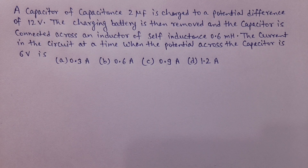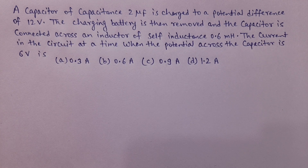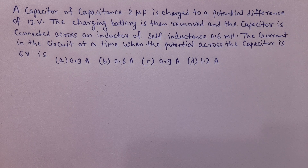हम लोगों को correct option choose करना है. एक capacitor है जिसका capacitance का value 2μF है. इसको charge किया गया 12V potential difference के साथ. जब यह fully charge हो गया, battery को remove करने के बाद इस capacitor को एक inductor के साथ connect किया गया जिसका inductance value 0.6 mH है. Current हम लोगों को निकालना है जब potential drop across the capacitor 6V होगा.